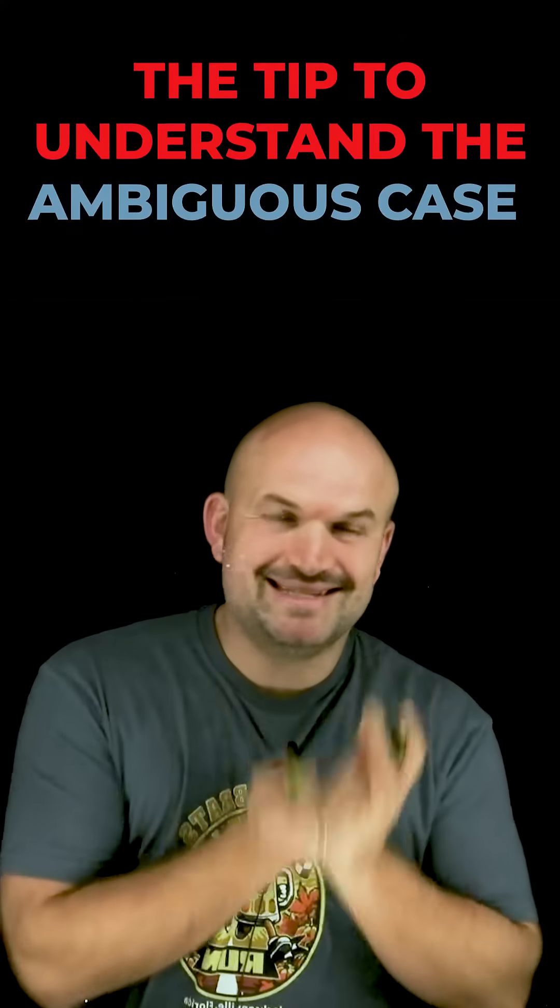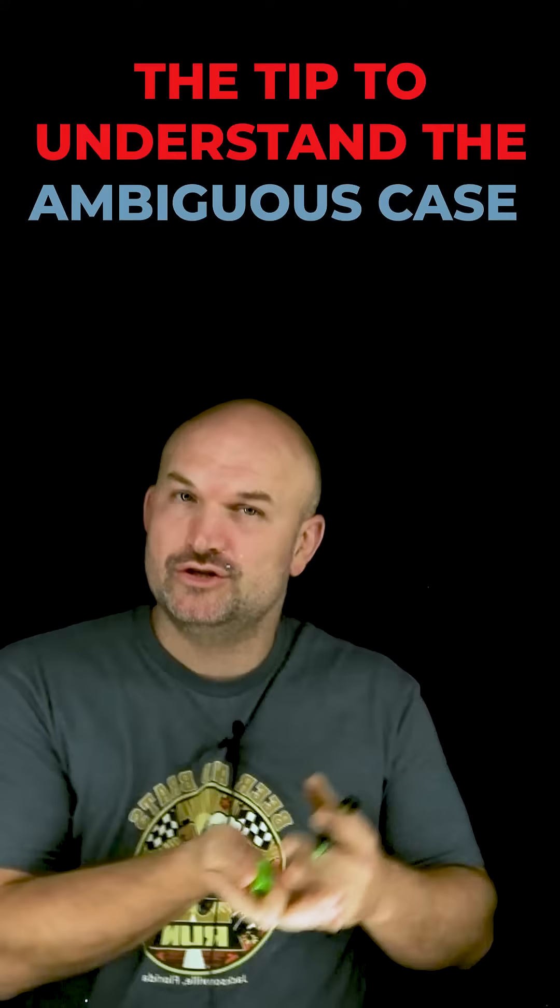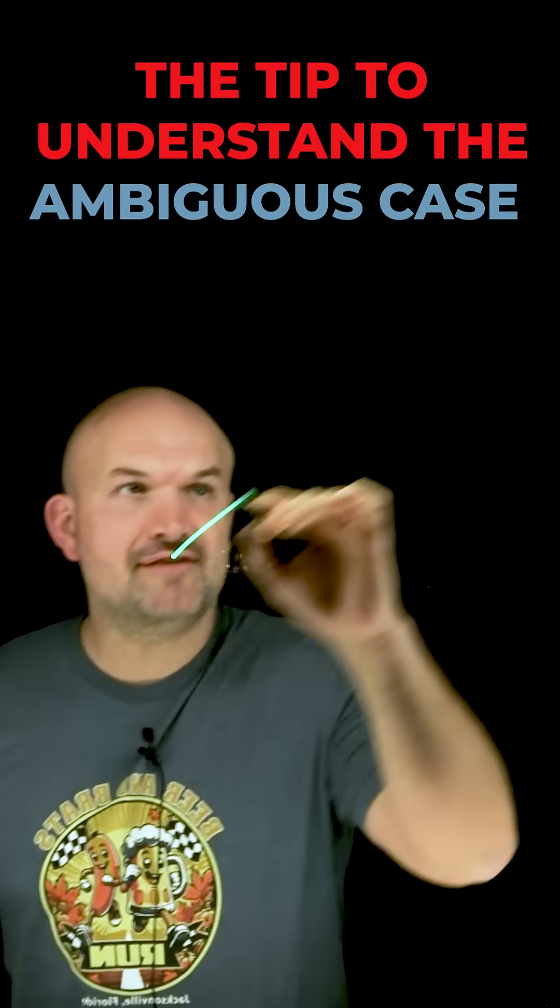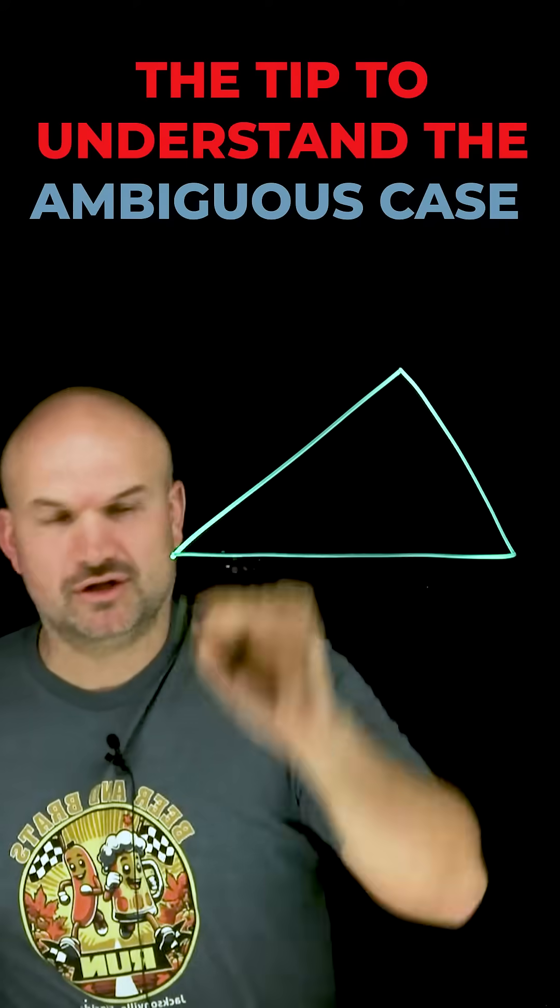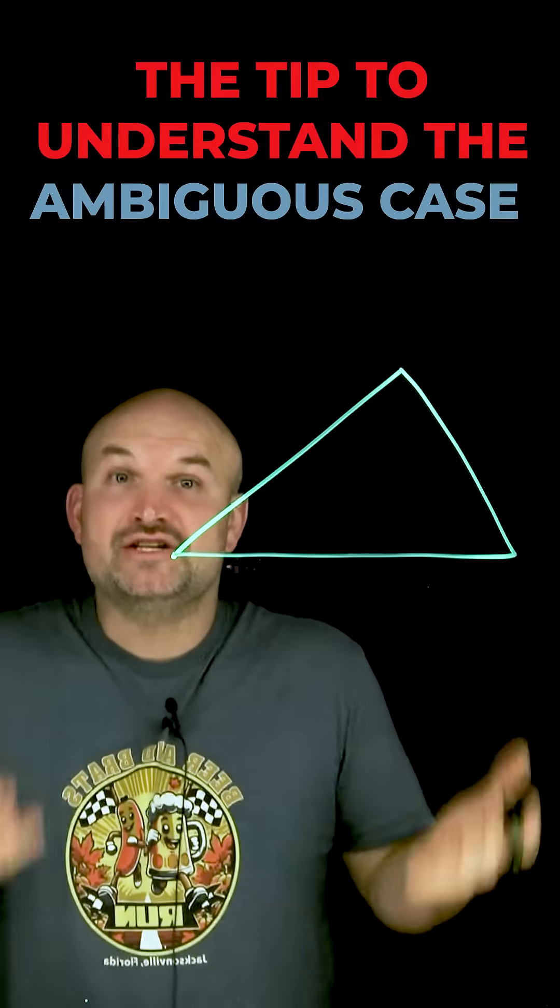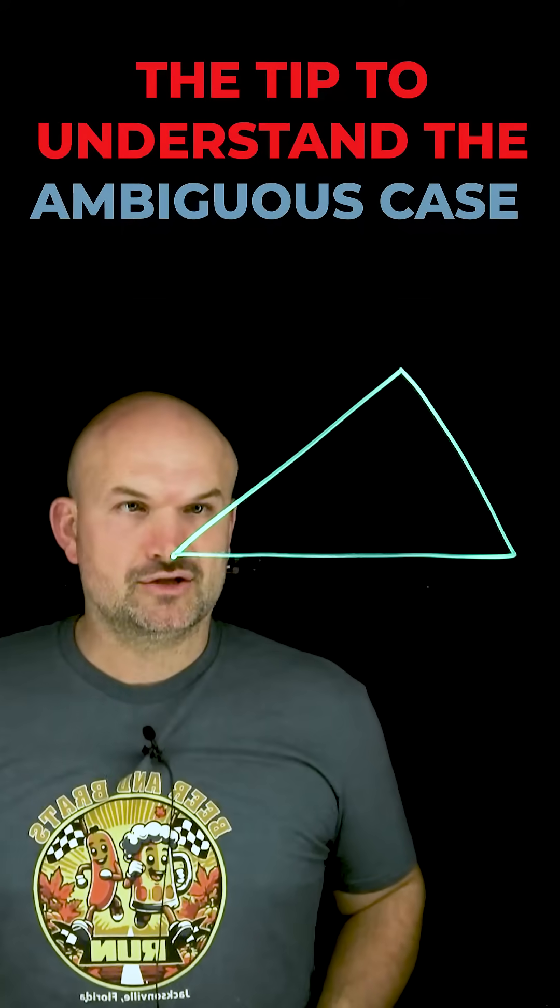In my opinion, the best way to deal with the ambiguous case, one, two, or no triangles, is to work with the height of your oblique triangle. I first always like to draw my triangle to look like this. This is the best and easiest way for me to be able to understand visually what exactly the ambiguous case looks like.